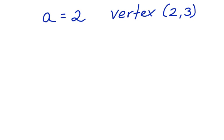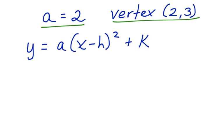Well, first, let's start with y equals a times x minus h squared plus k. Here's the vertex form of the equation. Now we can substitute the given values into this equation and write a new equation given these parameters.